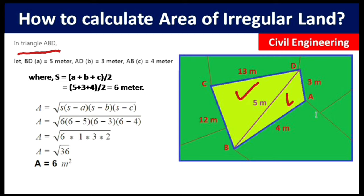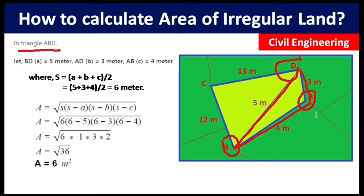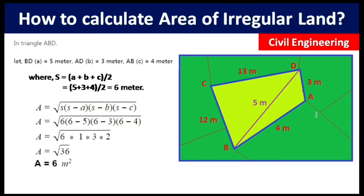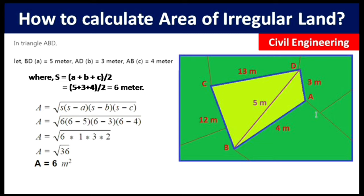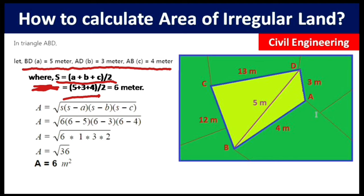Now let's move to the calculation. First, in triangle ABD, we calculate the area of this triangle. You can assume any side as a, b, or c. Here a = 5 m (the diagonal), b = 3 m, and c = 4 m. So s = (5 + 3 + 4) / 2 = 6 meters.